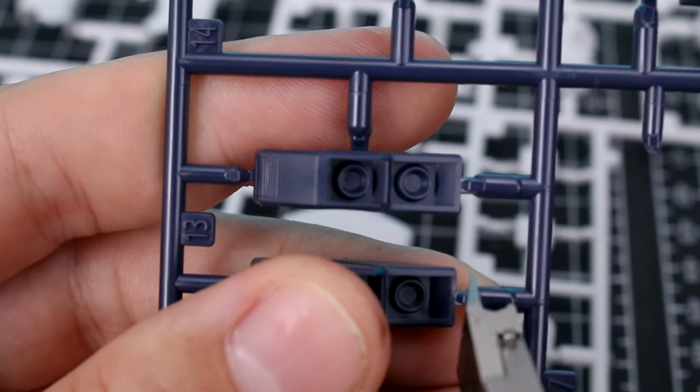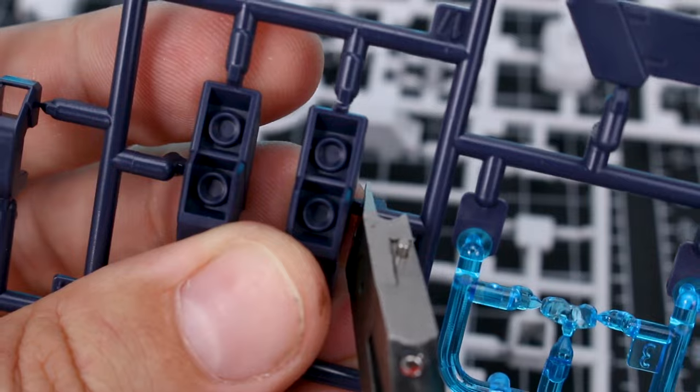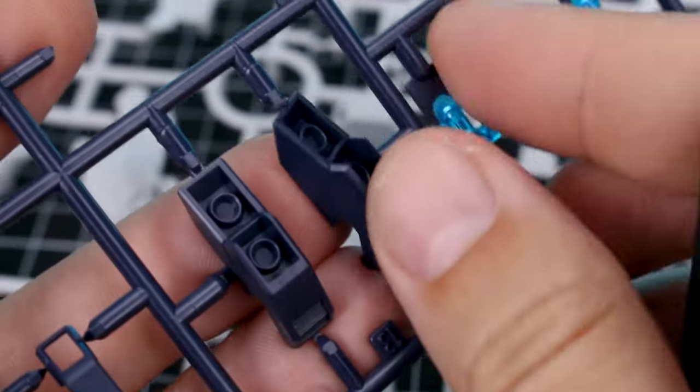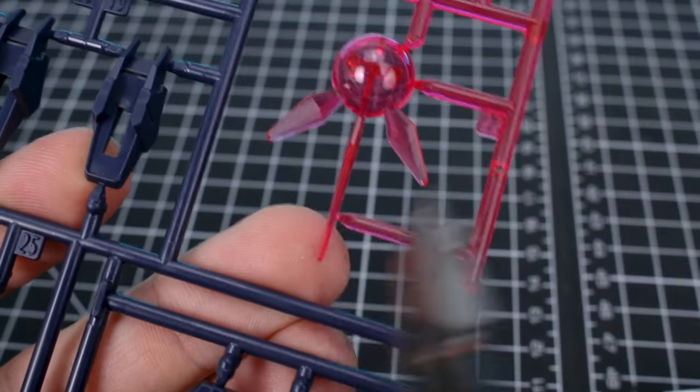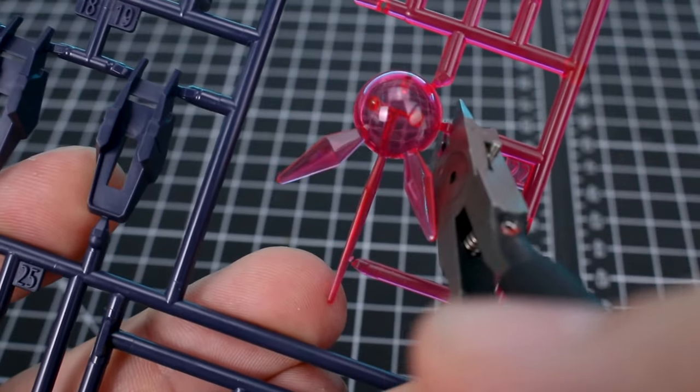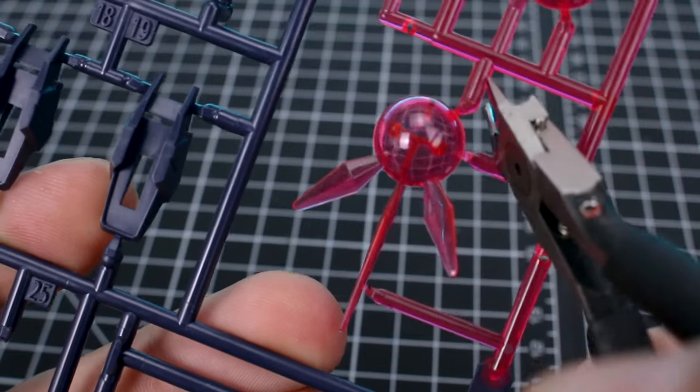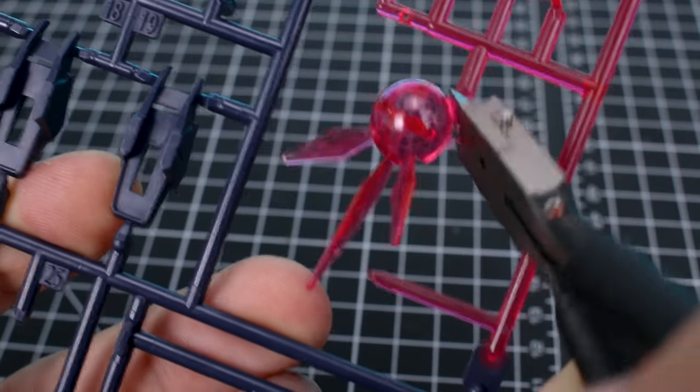What's recommended, even if you're using the sharpest single-blade nippers, is to leave a little bit of the gate there when you cut. So don't cut the gate flush right up against the part. This reduces the risk of damaging the part in any way. Leave a little bit of the gate attached onto the part. That'll be your nub that we're going to then remove.